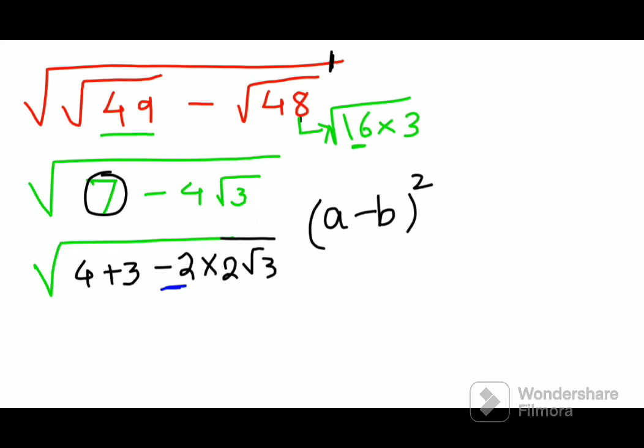So we can write this expansion is nothing but a square plus b square minus 2ab. Now if you look closely here, this is looking very similar to this. So here I can say that your a is nothing but 2 and your b is becoming root 3.